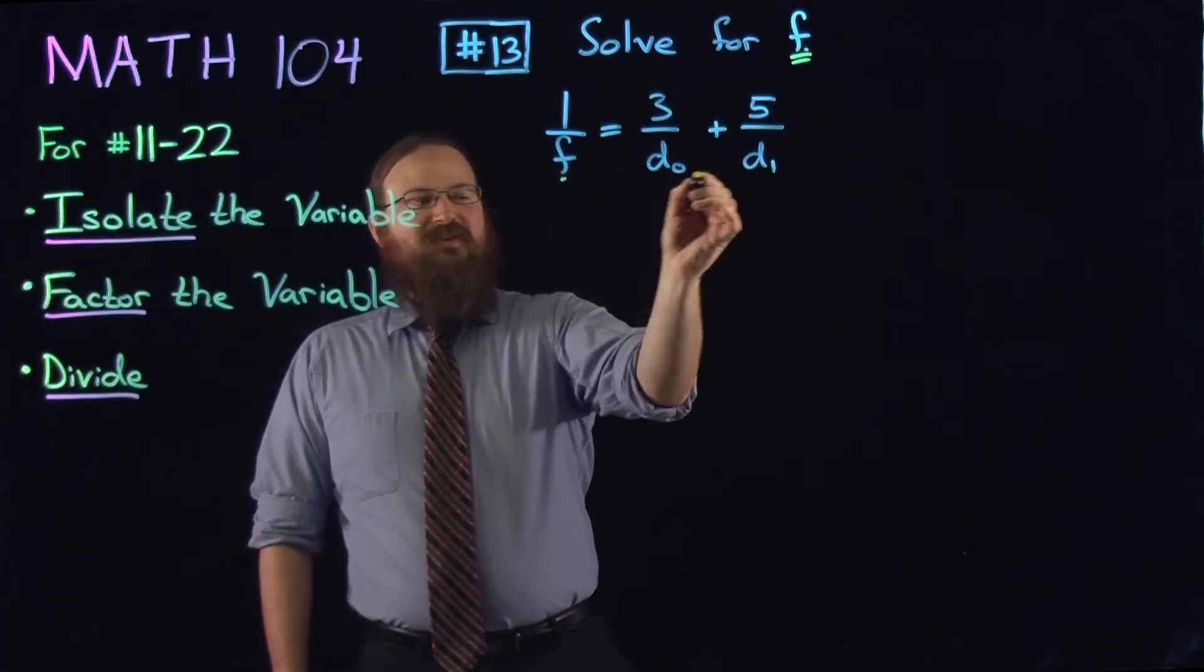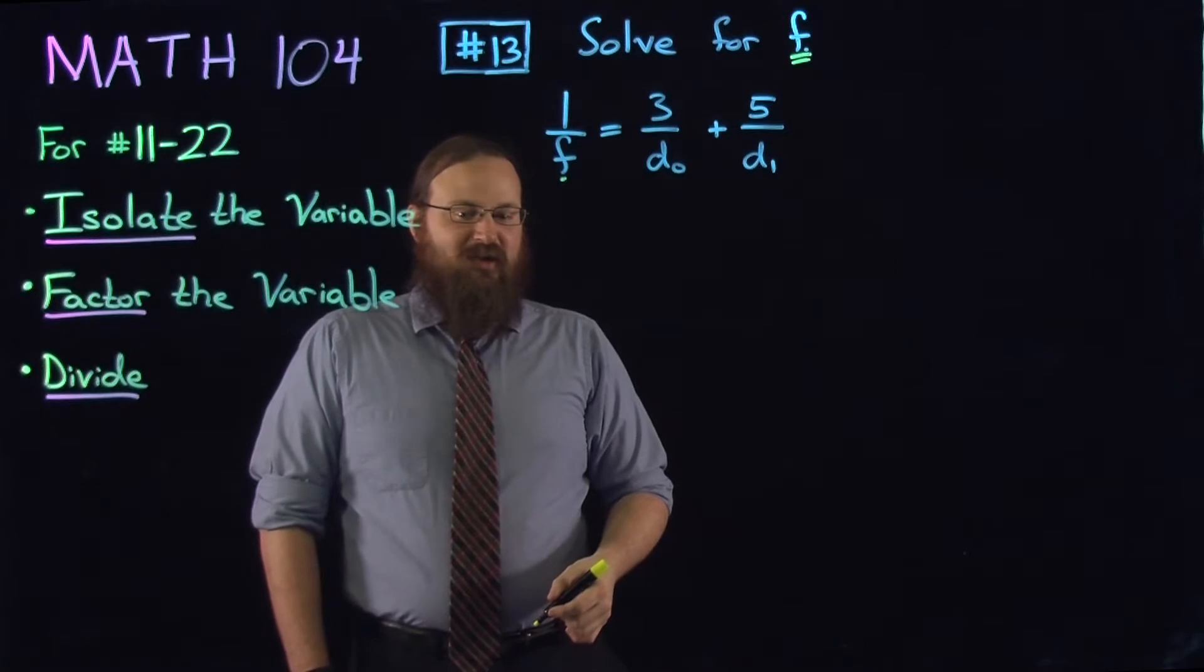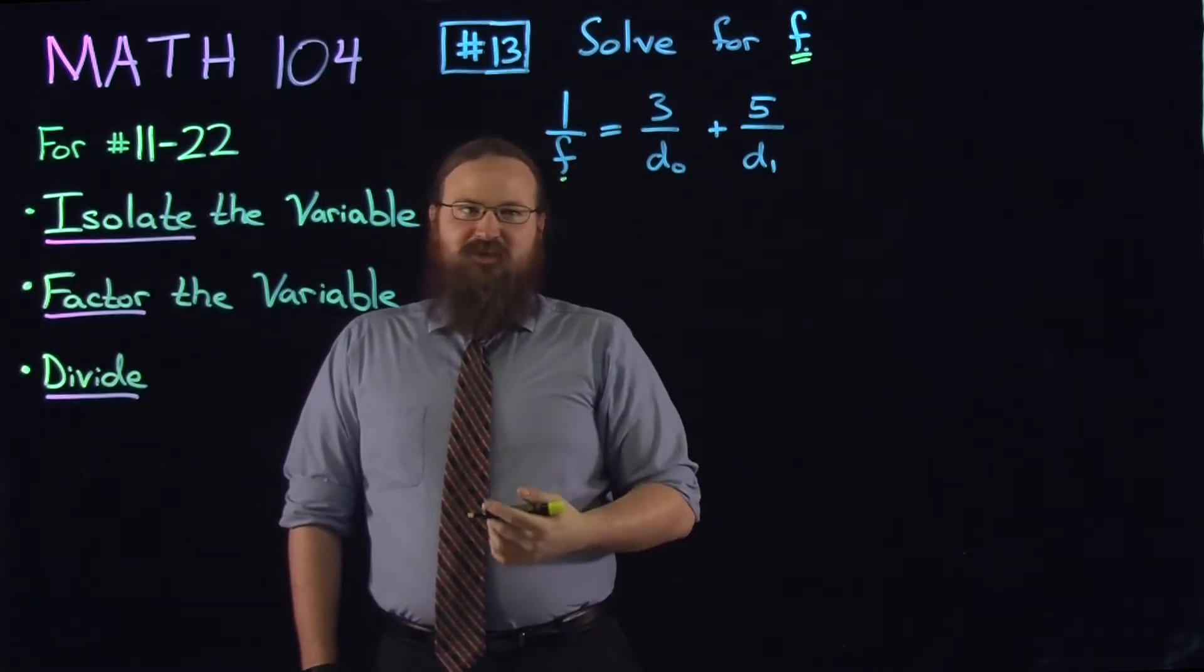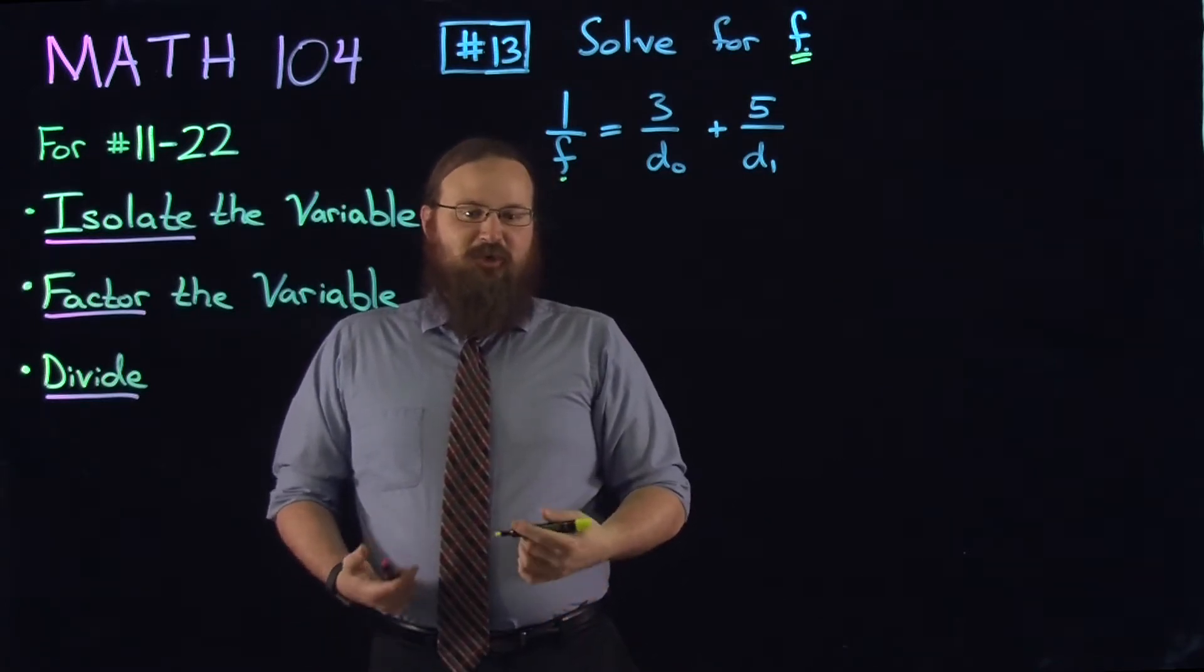So here we got f, d0, and d1. We're only trying to isolate and solve for f. So the first thing we're going to do is isolate the variable. This is the more involved step. What we have to do is, in cases like this, first clear the denominator.